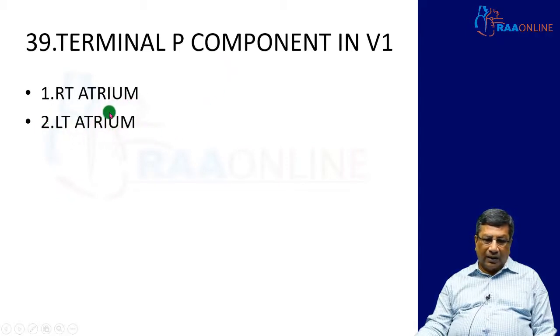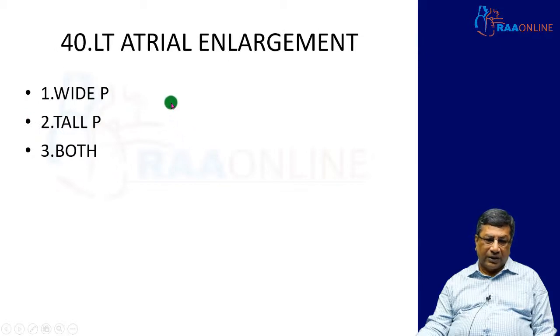The terminal P force in V1 is constituted by the left atrium, because the left atrial depolarization is going to go away from V1. The left atrium is a left and posterior structure, V1 is a right and anterior structure. That's why the terminal P means left atrial depolarization.